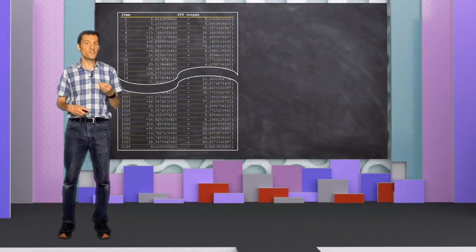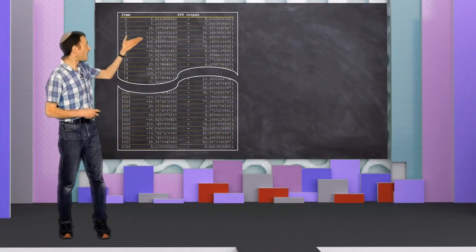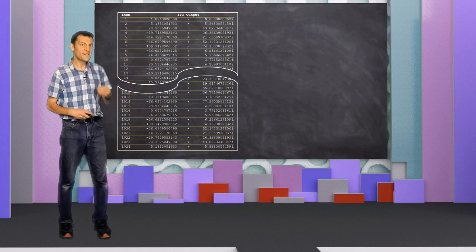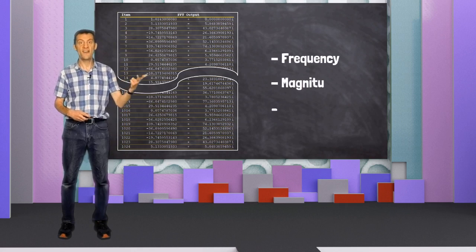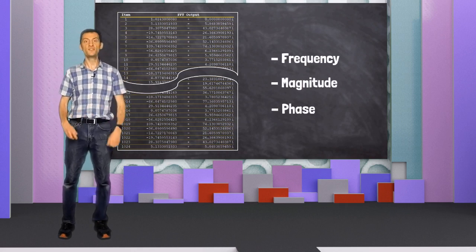We now know that the position of each item in the list tells us its frequency. But sinusoids have three properties: frequency, magnitude and phase. So here's your challenge for this video.